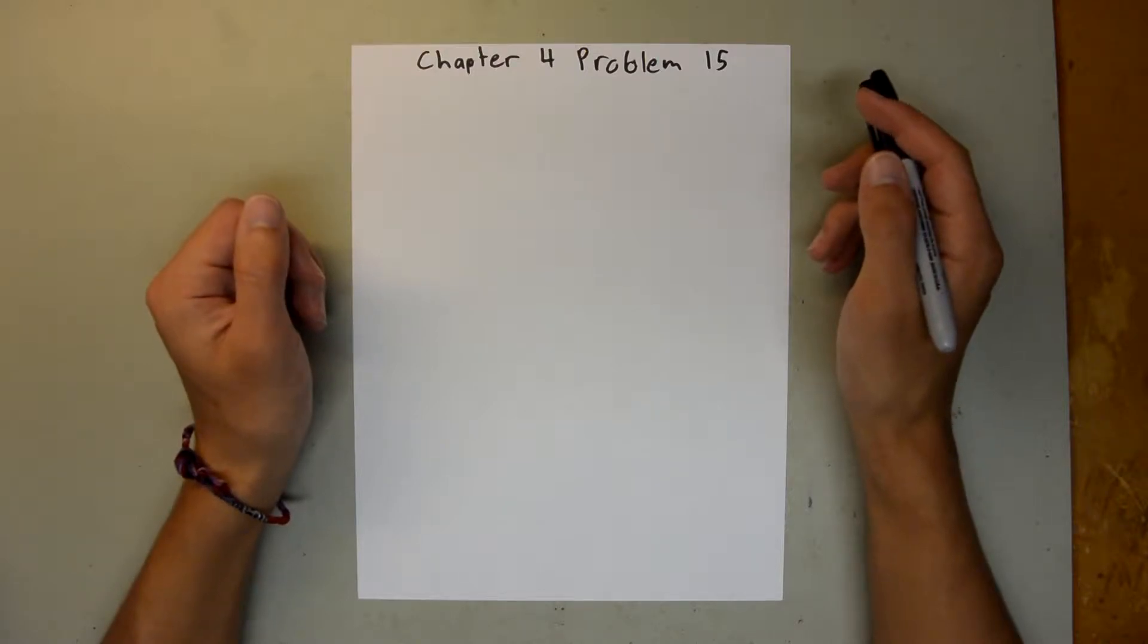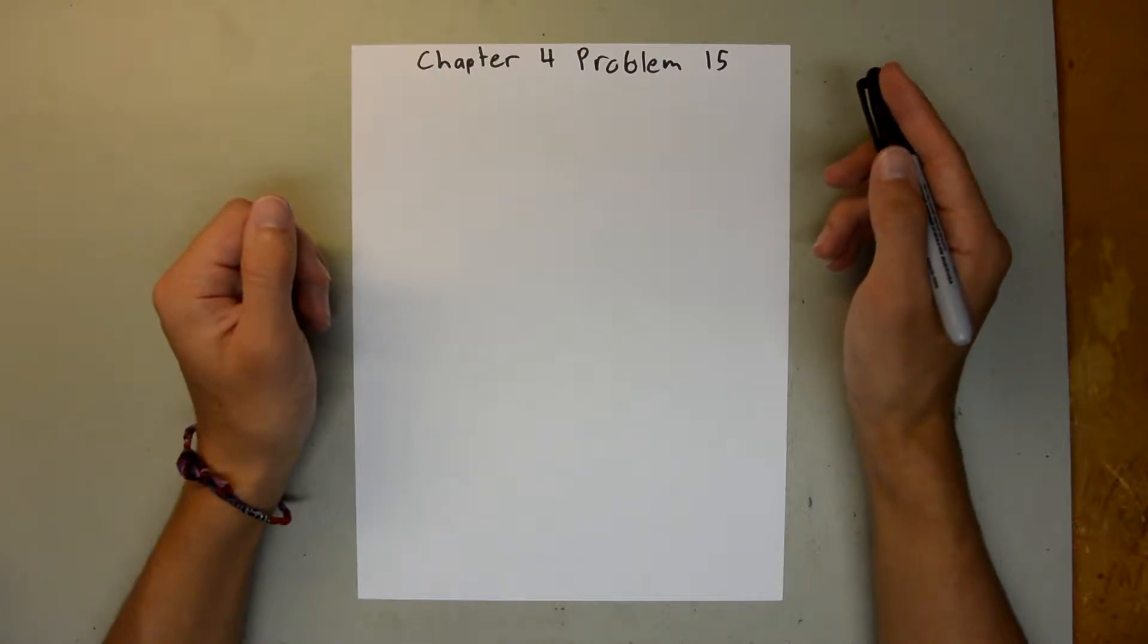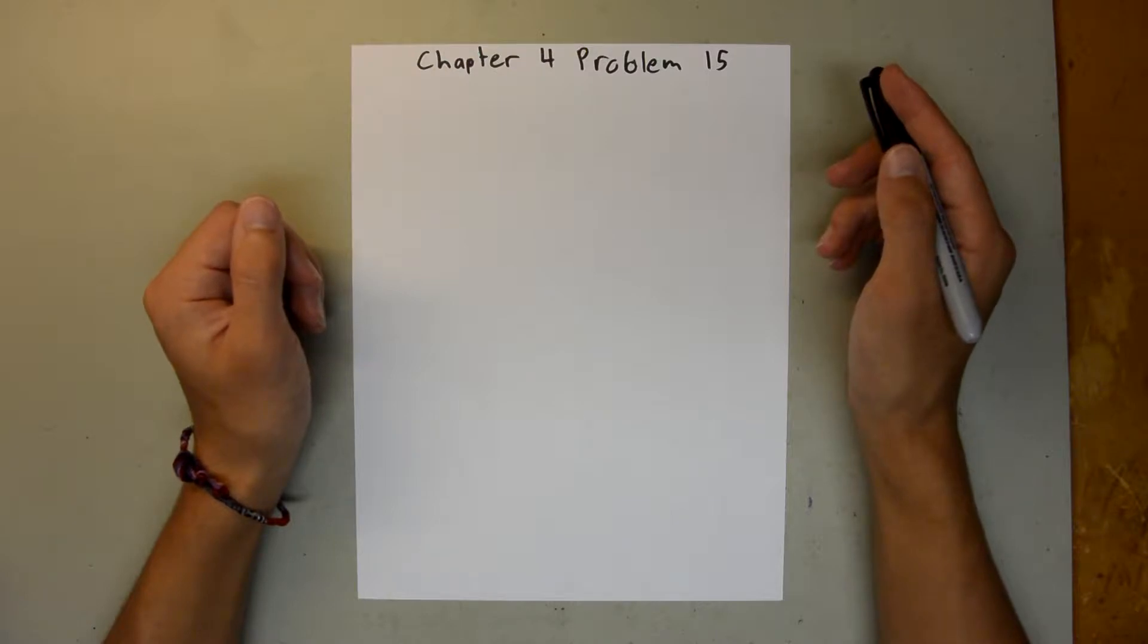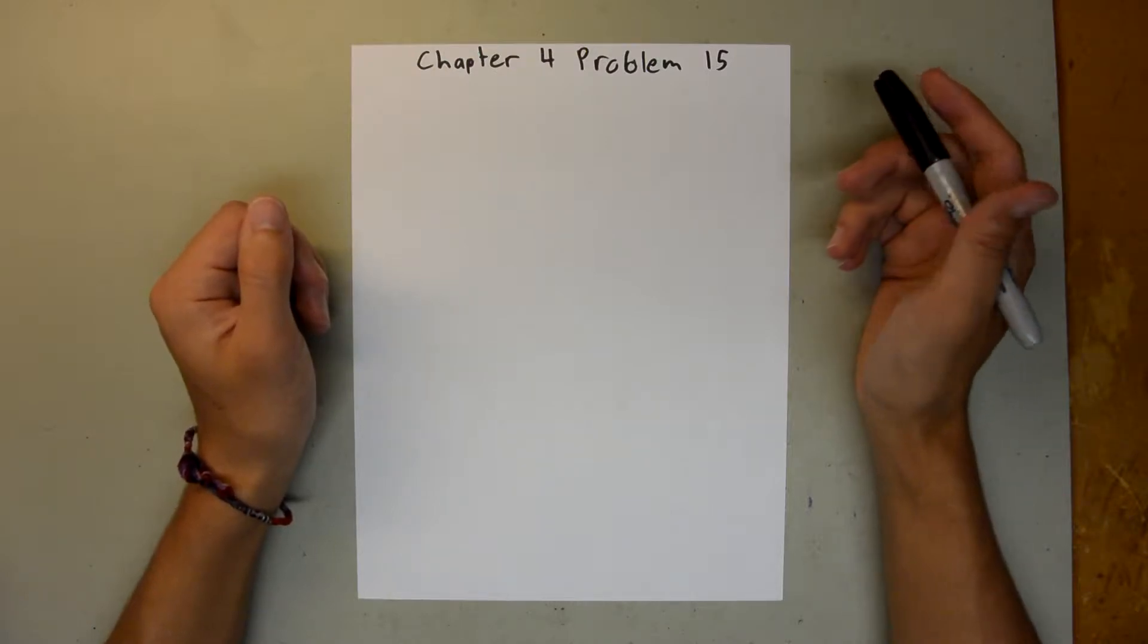Chapter 4 is all about motion in 2 and 3 dimensions. And in Problem 15, we have a cart, and we're told the initial velocity in the x and y, and we are told the acceleration in the x and y, and we are asked to find the velocity when this cart is at its maximum y value.